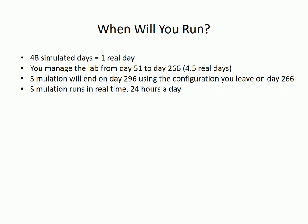The simulation will run at a speed of 48 simulated days per real day, or two simulated days per hour. Right now the simulation is suspended on day 50, so you have 50 days of historical data to review. You run the simulation from day 51 to day 266 — roughly 4.5 real days. During this time you can change any decision as you like. The simulation will finally end on day 296 using the configuration you leave on day 266. Those final 30 days will run in probably less than 5 minutes at an accelerated rate.